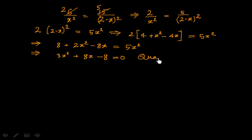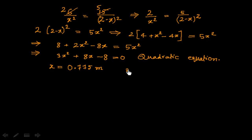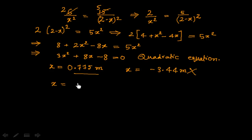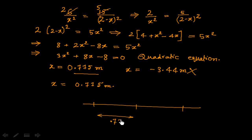This is a quadratic equation. Solving for x gives two roots: x equals 0.775 meters and x equals negative 3.44 meters. The negative root has no physical meaning because the distance x must be positive, so we discard it. Therefore x equals 0.775 meters — meaning Q3 is 0.775 meters from Q2 and 2 minus 0.775 meters from Q1.